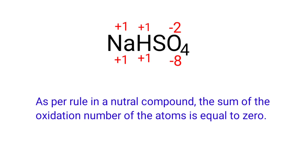As per the rule, in a neutral compound the sum of oxidation numbers of atoms is equal to zero. So the numbers along the bottom must add up to zero, meaning the number under S must be plus six. Therefore, the oxidation number of sulfur is plus six.